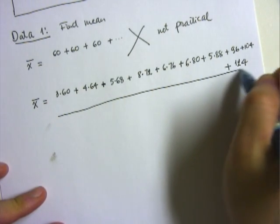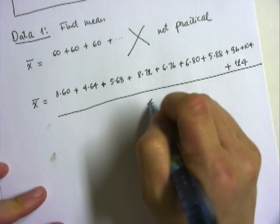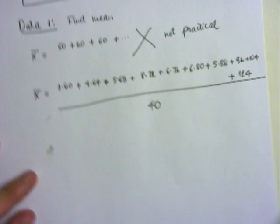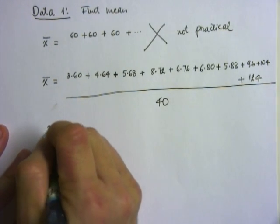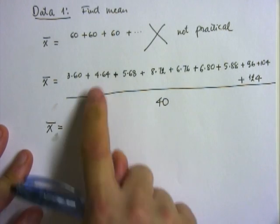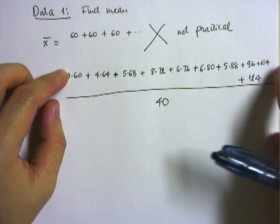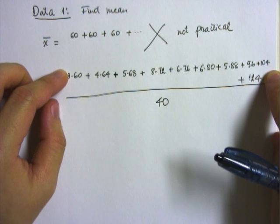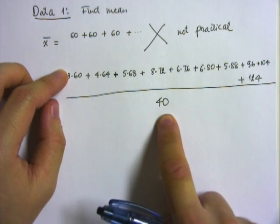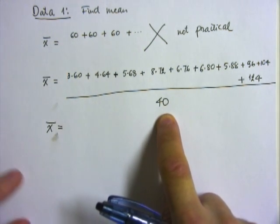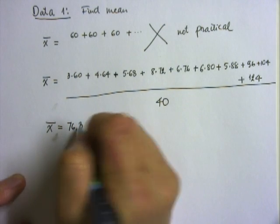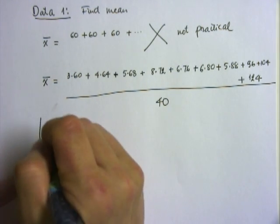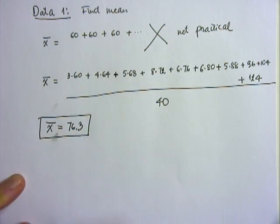And now once I finish adding, you can just go ahead and divide it. Keep in mind the total here is 40, so my mean value in the end turns out to be, after you do all the calculation, make sure you finish adding and then you're going to divide the whole sum by 40, and your mean value is going to be 76.3 according to my calculation.